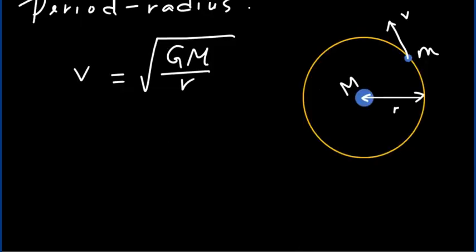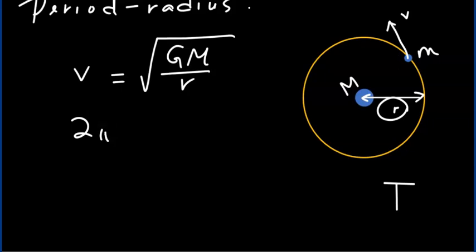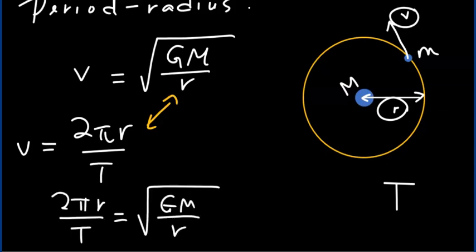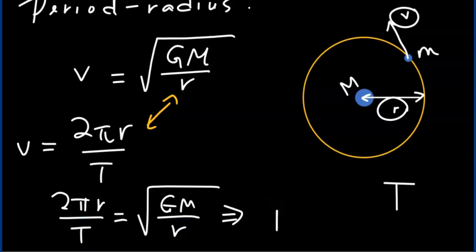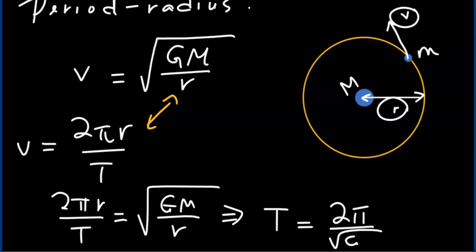Now let's obtain a relation between orbit radius and orbit period T, where T is the time for the satellite to complete one revolution. Since the circumference of the orbit is 2πr, the orbital speed v equals 2πr over T. Equating this with our speed expression and rearranging, the orbital period equals 2π over the square root of G times M, times r to the power 3 over 2.